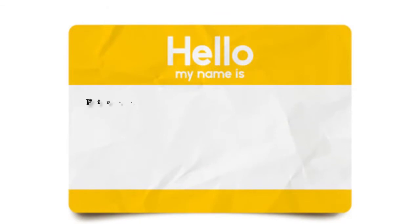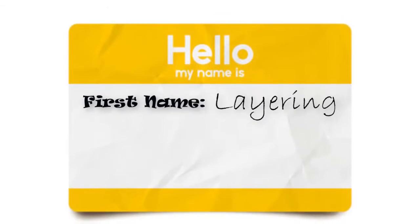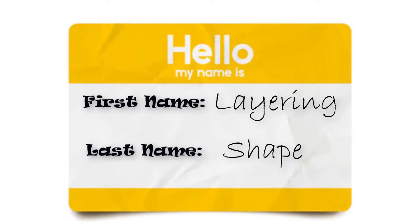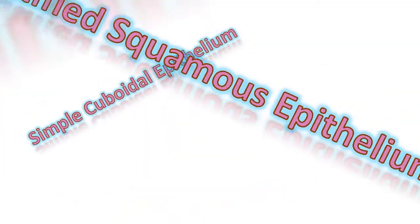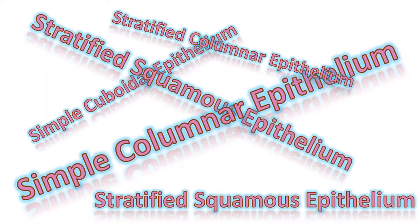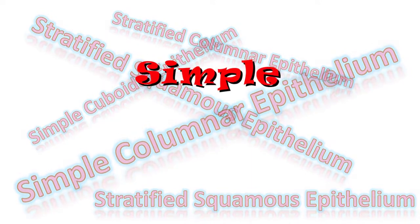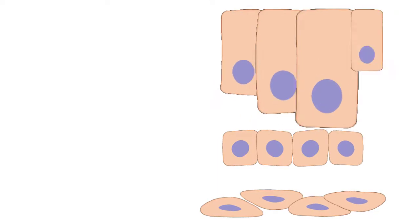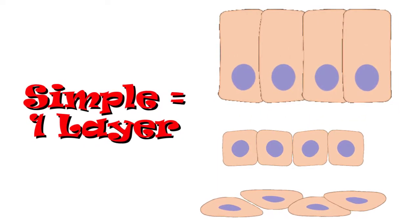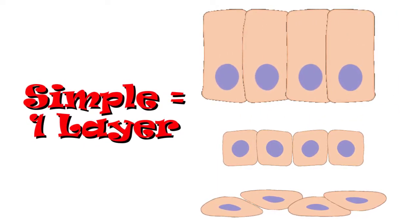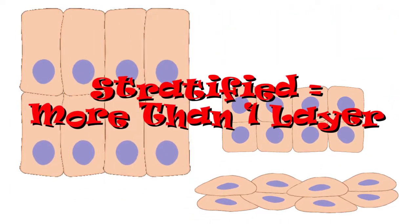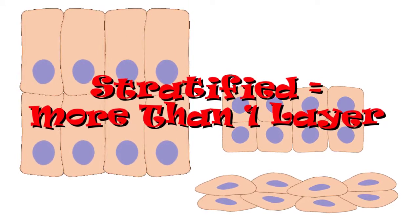Epithelial tissue is named according to its layering, followed by the shape of the epithelial cells that make up that layer. The first name of epithelial tissue is either going to be Simple or Stratified. When the tissue is composed of only one epithelial cell layer, we refer to this tissue as being Simple. When epithelial tissue is composed of two or more layers, we refer to it as Stratified.